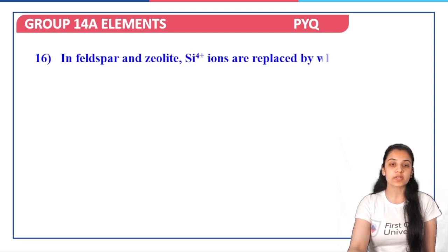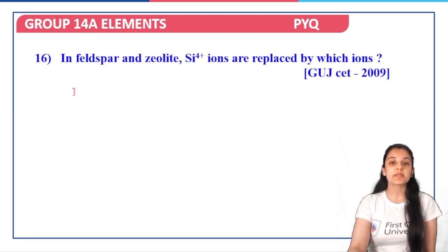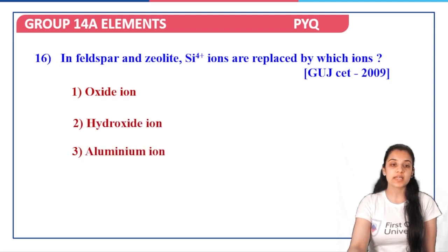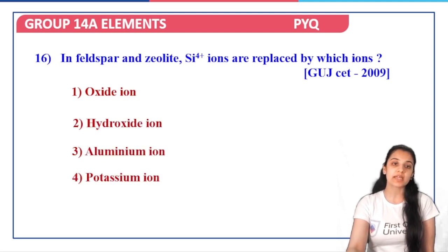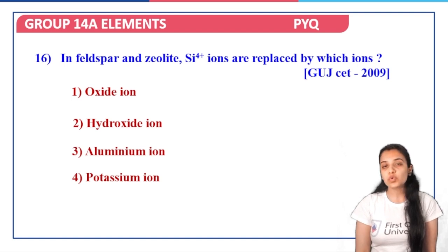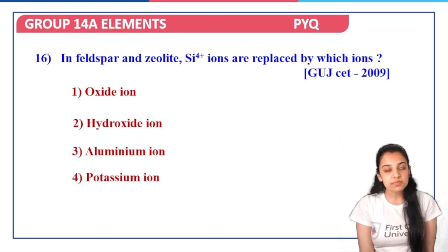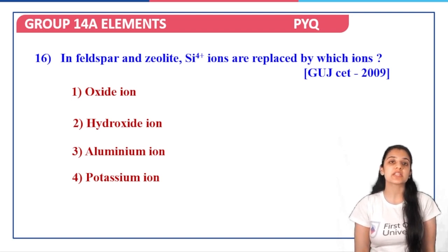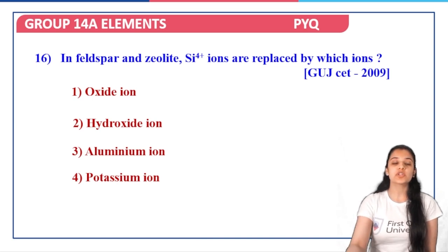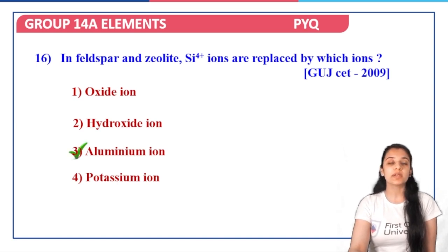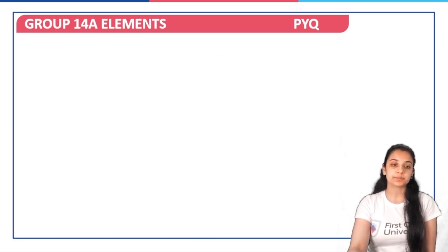Next: in feldspar and zeolite, Si4+ ions are replaced by oxide ions, hydroxide ions, aluminium ions, or potassium ions? Even if you don't know about feldspar, you know that in zeolite Si4+ ions are replaced by Al3+ ions. So option three — aluminium ions — is the correct answer.